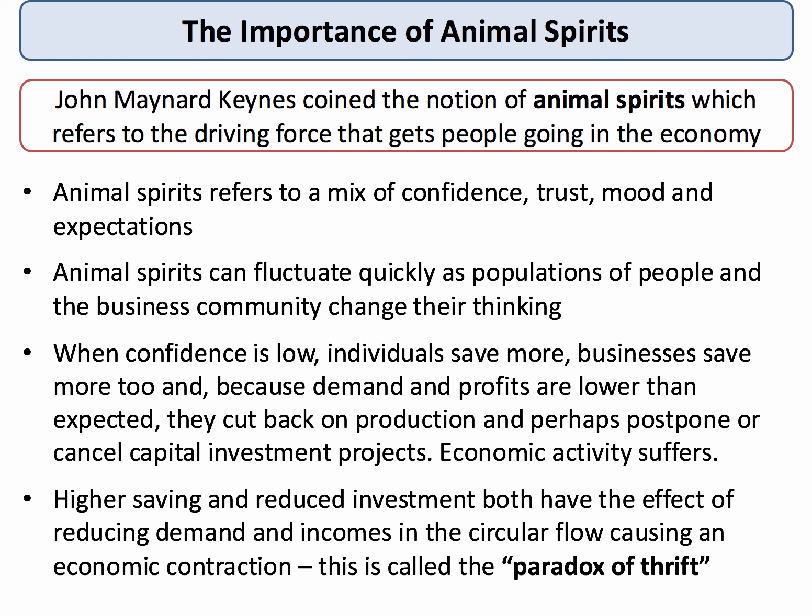In a situation where confidence is low — where animal spirits are sagging — people save more. Businesses save more too, and because there's less demand and lower profits, businesses tend to scale back their production and perhaps postpone some major planned investment projects. So there's a deterioration in animal spirits related to a fall in planned investment. Indeed, when people save more and when there's reduced investment, both of those cause a contraction in aggregate demand and can cause the level of real national income to go down.